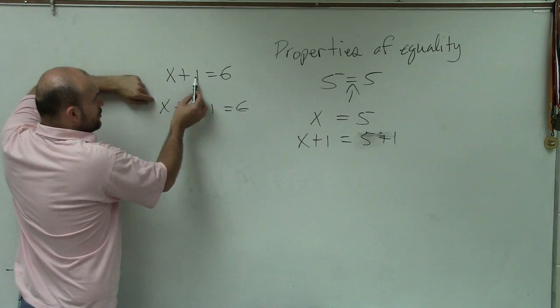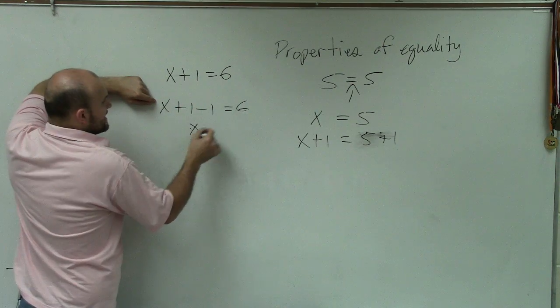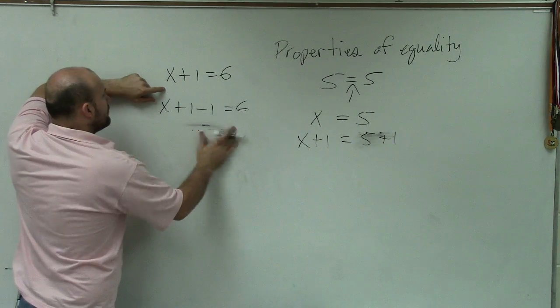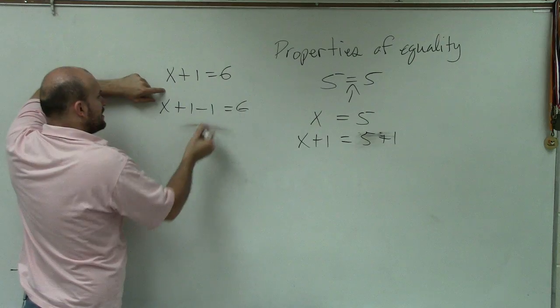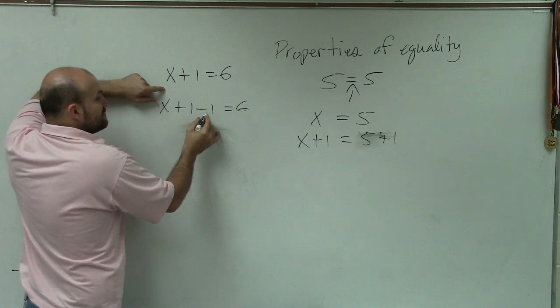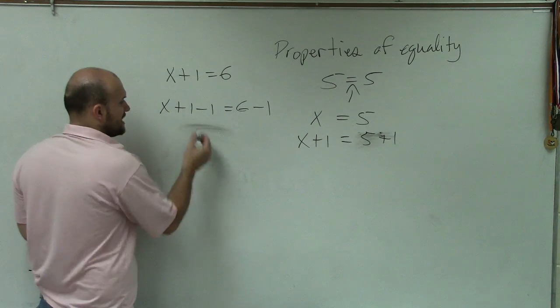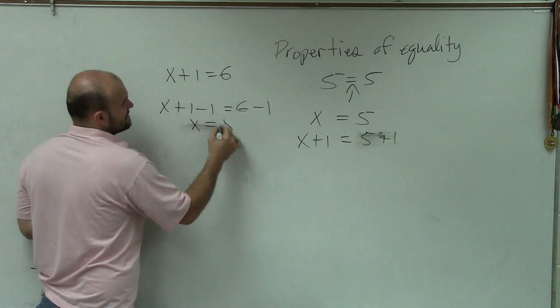We know 6 plus 1 is not equal to 6. So by using our properties of equality, whenever I apply the inverse operation on one side, I have to make sure I apply it on the other side. Therefore, I get x is equal to 5.